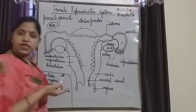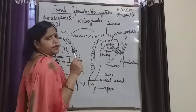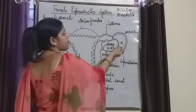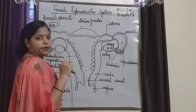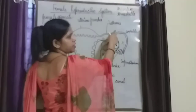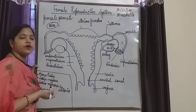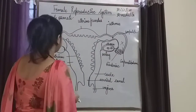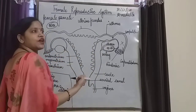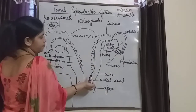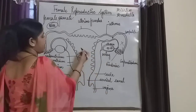Whenever you are studying in 12th class or 10th class and a question asks where fertilization takes place in the fallopian tube, you should mention the specific place: the ampullary isthmus junction. So the fusion of male sperm and female ova takes place in the ampullary isthmus junction. Paired ovaries and paired fallopian tubes are present in the female reproductive system. Then there is this pear-shaped structure — you can say it is an inverted pear — broad at the top and narrow at the bottom, which is known as the uterus.